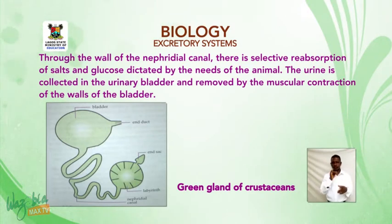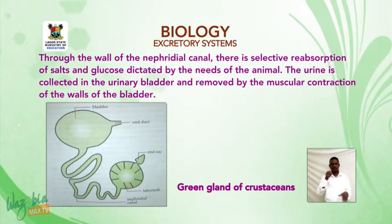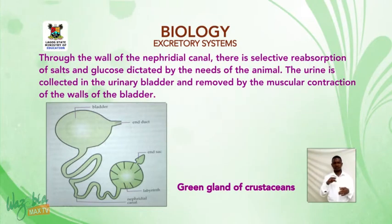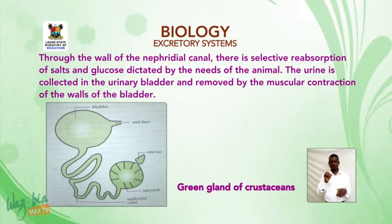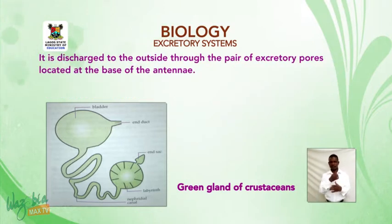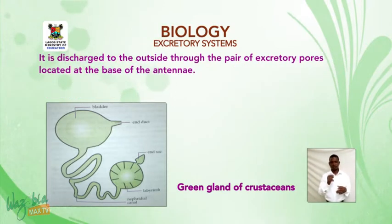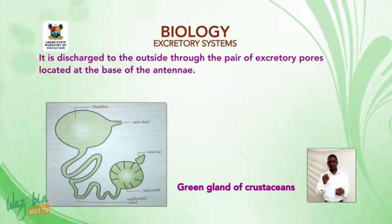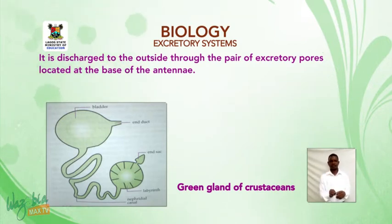The urine is collected in the urinary bladder and removed by muscular contraction of the bladder walls. It is discharged to the outside through a pair of excretory pores located at the base of the antennae.